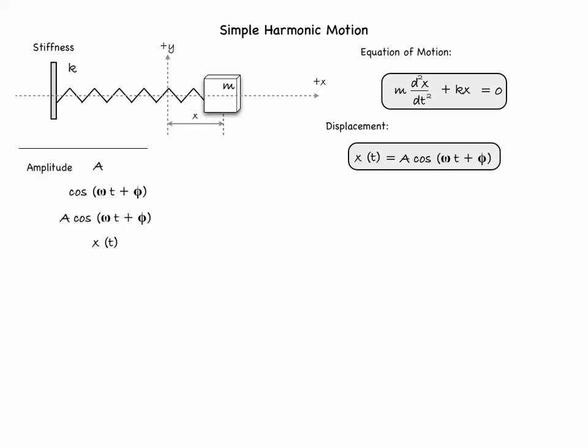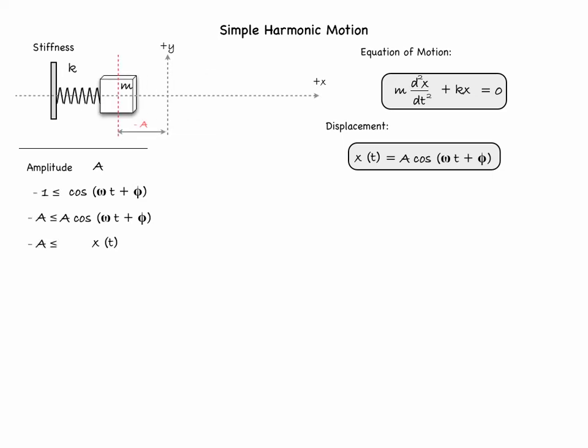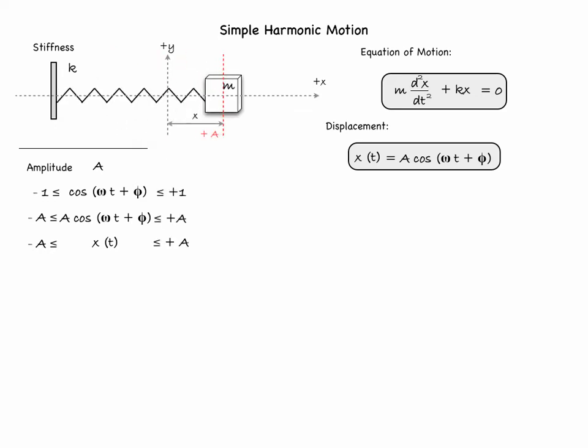Let's have a closer look at the amplitude A. As the cosine function is bounded, so too will be the displacement. The minimum value of cosine is minus 1, so the displacement x cannot be less than minus A — the block will never go beyond a distance A to the left of equilibrium. Similarly, the cosine cannot exceed plus 1, so the displacement can never be larger than plus A. The displacement is therefore limited between minus A and plus A, and A is called the amplitude of the system.